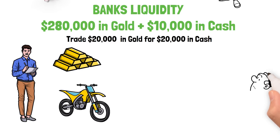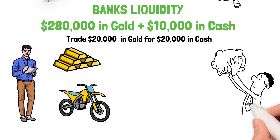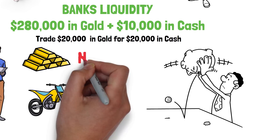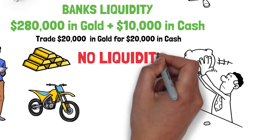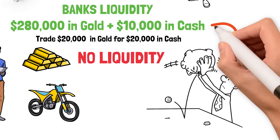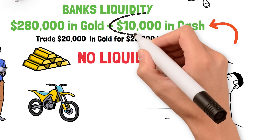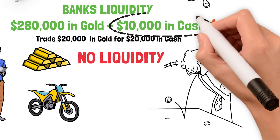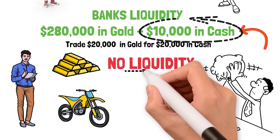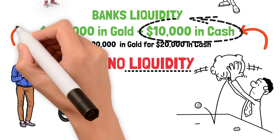You walk into the bank, place your gold bars on the desk, and tell the teller you want to swap them for cash. The teller walks over to the vault and comes back to tell you she's sorry — the bank doesn't have enough liquidity to cover your transaction. There is only $10,000 worth of cash left in the vault. However, if you wanted to swap your dollars for gold, there would be more than enough liquidity to process your transaction.